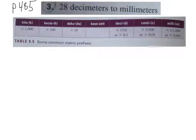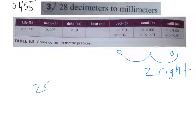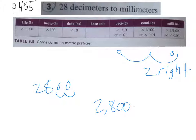One more of these. Number three: 28 decimeters to millimeters. We're over here at deci, and we just want to go over to milli. So 1, 2 to the right. We have 28 — decimal place is right there — and we move it two times to the right, opening up two more zeros, so we get 2,800 millimeters, or mm.